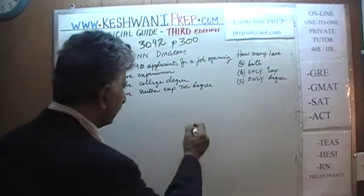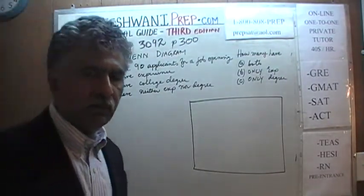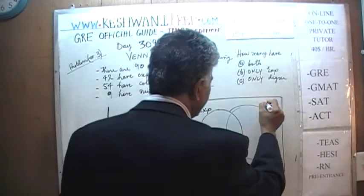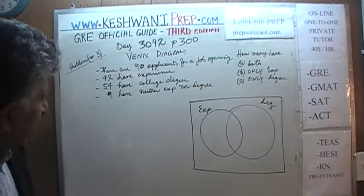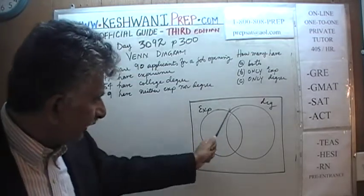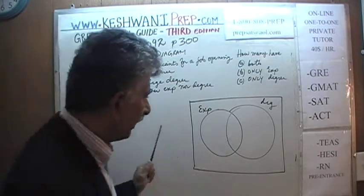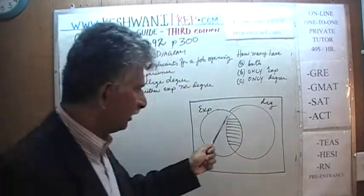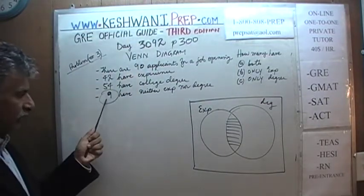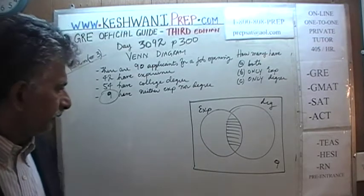The very first thing we want to do is draw a universal set, which includes everybody — including the people who have neither degree nor experience. We draw two sets: set number 1 for job experience and set number 2 for degree. The 9 people who have neither experience nor college degree go outside both sets, in the universal set corner.